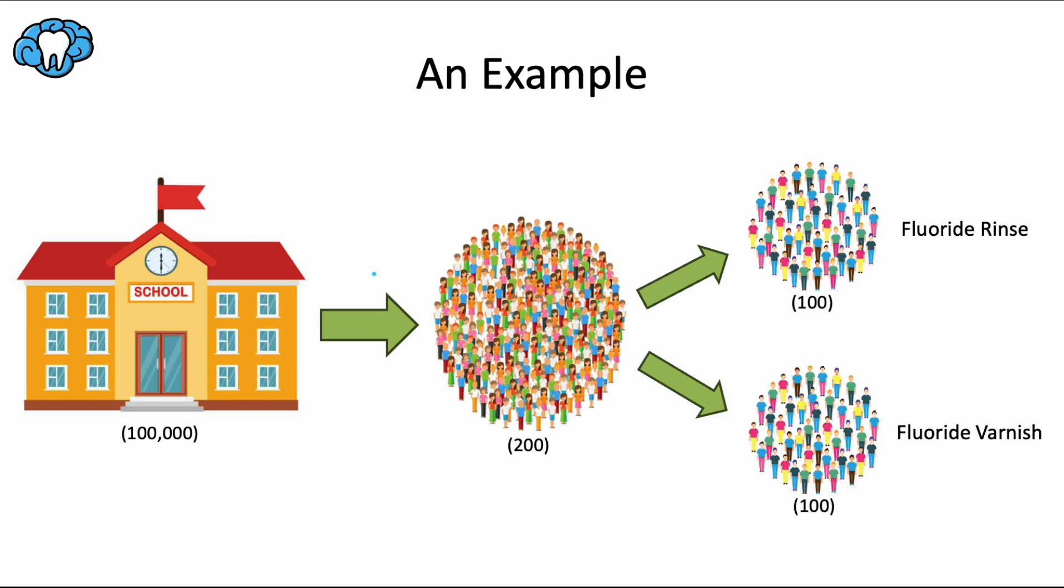So in summary, sampling is about selecting participants from a population to be in the study. And allocation is assigning those selected participants to different groups within the study. Both steps are crucial in a research design, but they serve different purposes and occur at different stages in the research process.